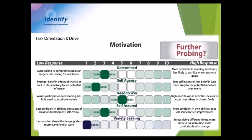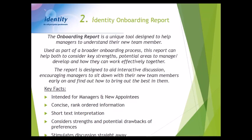Another example looks at motivation. Red circles highlight key areas: the candidate appears less determined and more willing to compromise on goals, with a stronger belief in the effects of chance or luck, and a very strong preference for familiar work routines with less variety-seeking. These are the areas to probe when exploring motivation and finding out more from that individual.